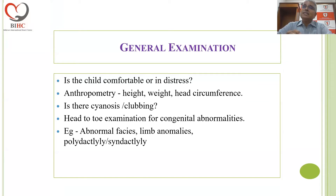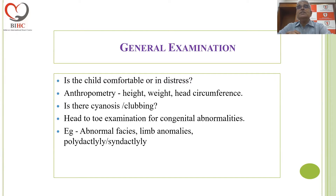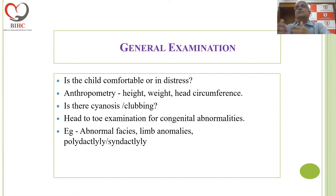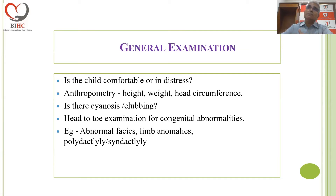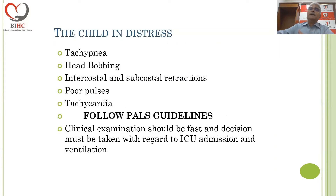You will get height, weight, and head circumference. You can see whether there is cyanosis or clubbing. You can do a head-to-toe examination for congenital abnormalities like abnormal facies, limb anomalies, polydactyly, syndactyly, etc., which have a certain clinical connotation and as a pointer to the type of heart disease the child may be harboring.